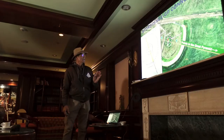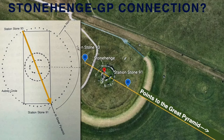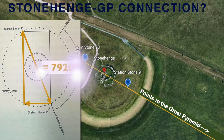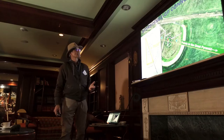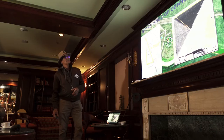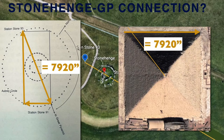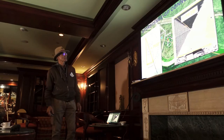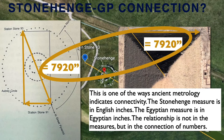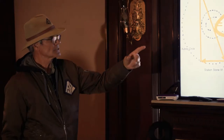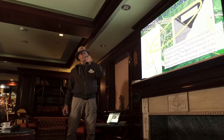If you take the measurements of that diagonal — the width and the length — it happens to equal 7,920 inches. The Great Pyramid, one side, happens to equal 7,920 Egyptian inches. All four sides measure that. This is one of the ways ancient metrology indicates connectivity. The Stonehenge measure is in English inches; the Egyptian measure is in Egyptian inches. The relationship is not in the measures, but in the connection of the numbers. That's one of the things that ties all these megalithic sites together.